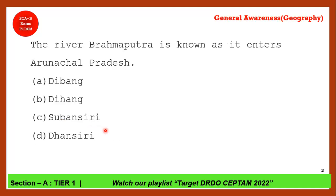Next question: The river Brahmaputra is known as what when it enters Arunachal Pradesh? The correct answer is option B — Dihang. Brahmaputra is one of the most important rivers from which many exam questions can come.